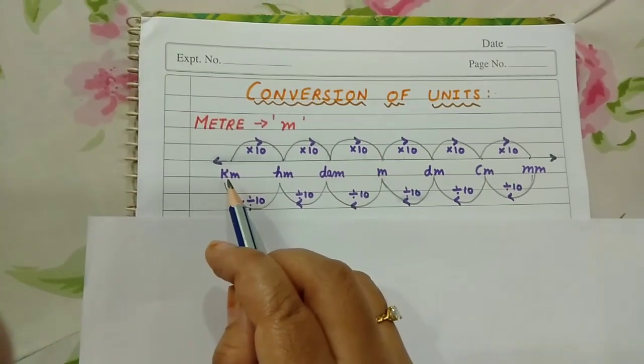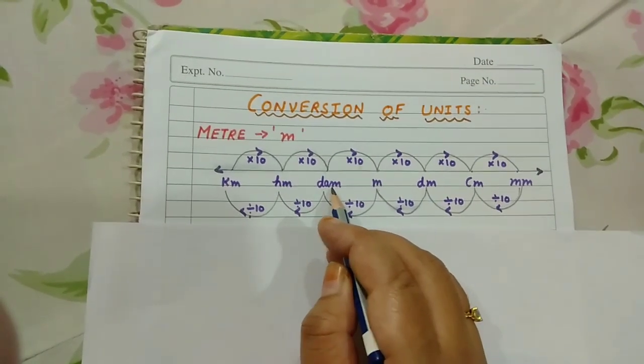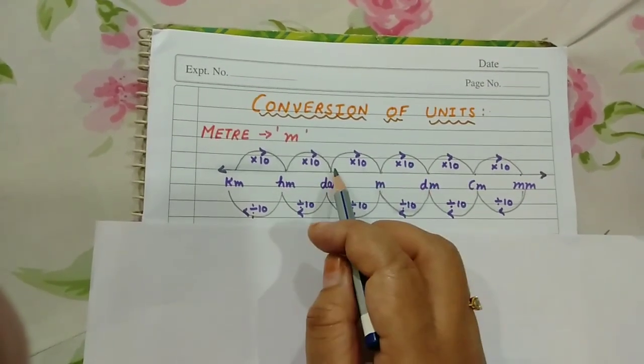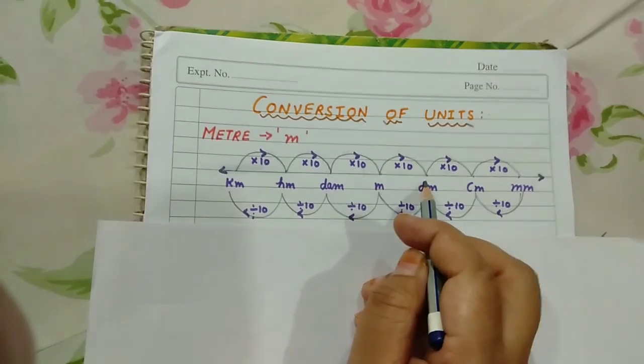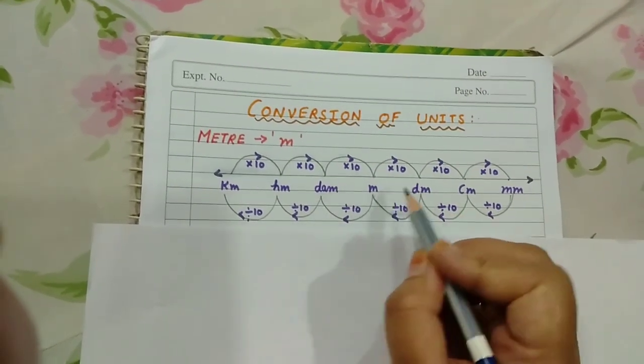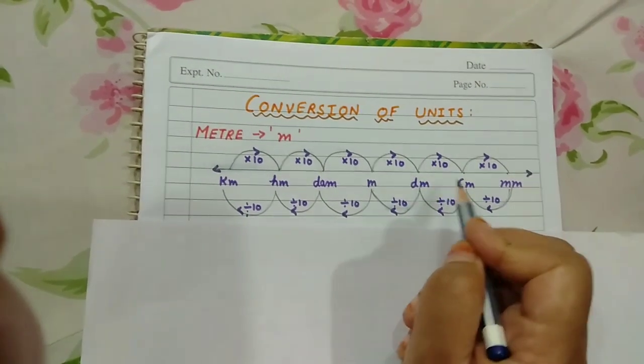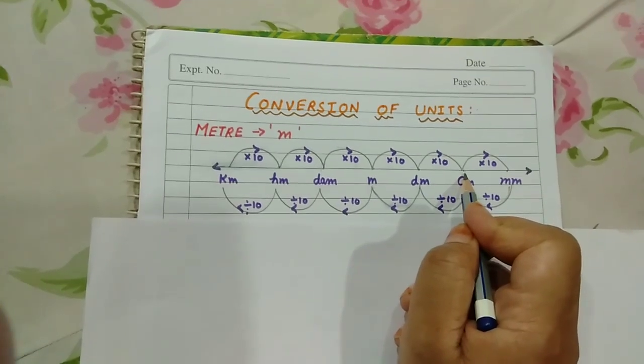Next, it's not compulsory that you always have to convert from the first unit. Suppose you want to convert decameter into decimeter. From here you can start. How many steps you have to go to the right side? Two steps. You have to multiply by 10 twice. Similarly, if you want to convert meter into centimeter, it's two steps.